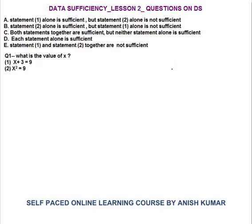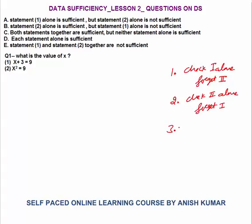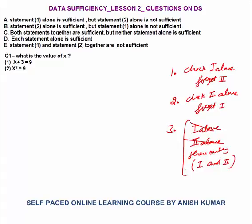In all such questions, there are three steps to solve the question. First, you have to check statement 1 alone — whether it is sufficient to answer the question. Forget the second statement. Second step: check statement 2 alone, whether it is sufficient to answer the question. Forget the first statement. Third step is applicable only when you are not getting the answer from 1 alone and not from 2 alone. Then only you need to combine 1 and 2 — assume that the data given in both statements is true, and then find out whether both statements together are sufficient to answer the question.